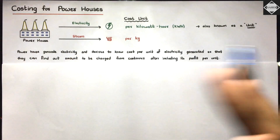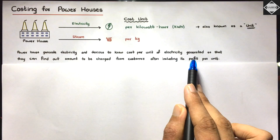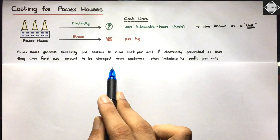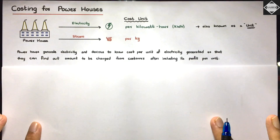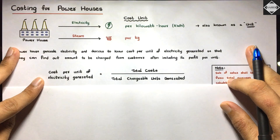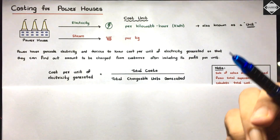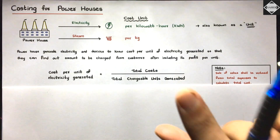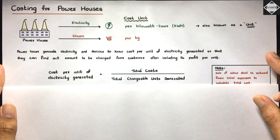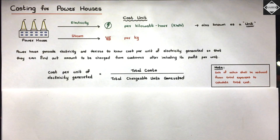In the module, questions are only on electricity, so we focus on that. The powerhouse generates electricity and wants to know the cost per unit generated, so they can determine how much to charge the customer including profit. The formula is: Cost per unit = Total cost of the powerhouse ÷ Total chargeable units generated. Note: any cost recovery, such as sale of ashes, should be deducted from total expenses.